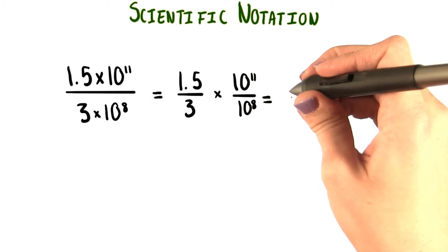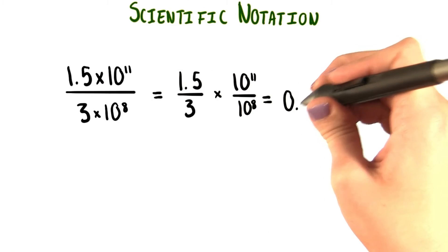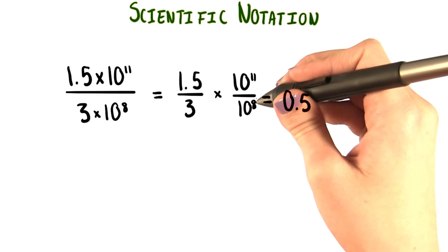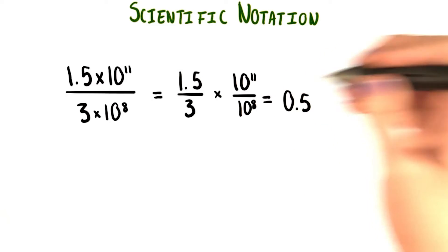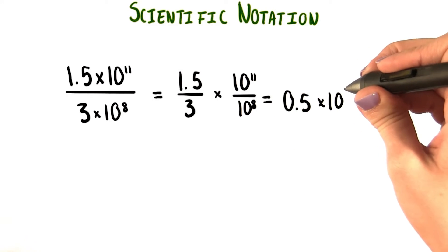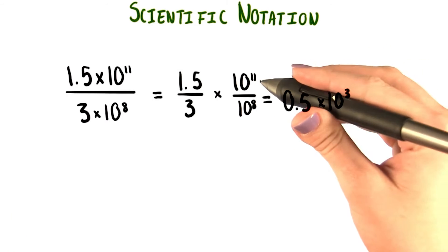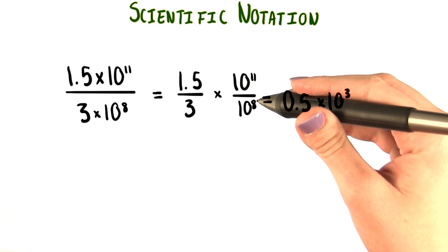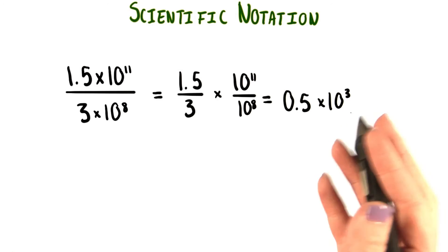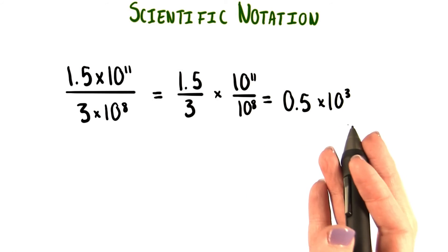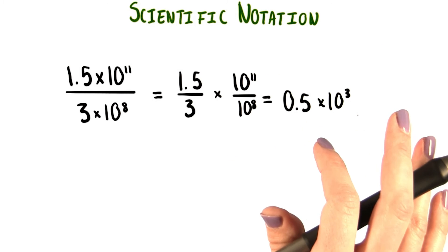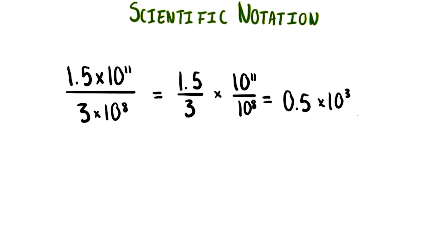1.5 over 3 is 0.5. And 10 to the 11 over 10 to the 8 is 10 to the 3. When you divide terms that have the same base, you just subtract the exponents. This number is actually not in scientific notation, but we're not going to worry too much about that.